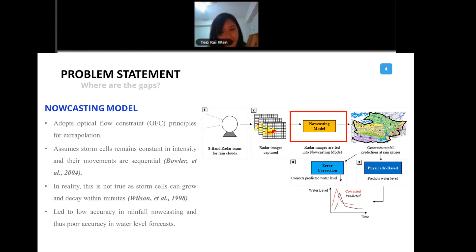What is the problem? The problem for us is actually at the rainfall nowcast model. Singapore is in the tropics. This rainfall nowcast model that we have adopts something called the optical flow constraint principle for extrapolation. It actually assumes that storm cells remain constant in intensity and their movements are sequential. But we know that, especially people in the tropics would know, in reality this is not true because storm cells can grow and decay within minutes.